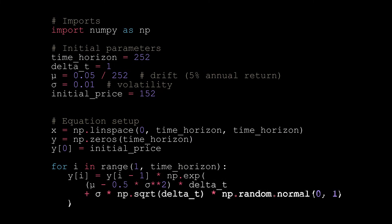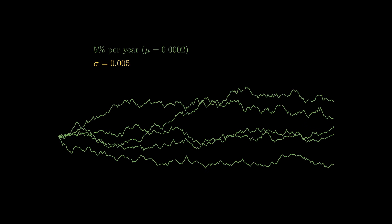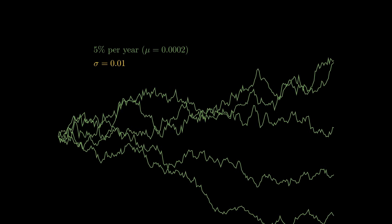Next, we learned how to implement a simple sample path simulator in Python. Finally, we visualized the impact of modifying the mu and sigma parameters on the behavior of the asset price over time.